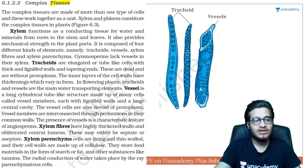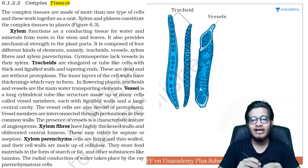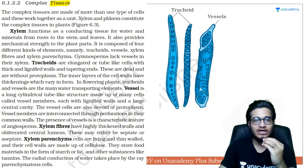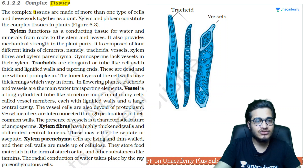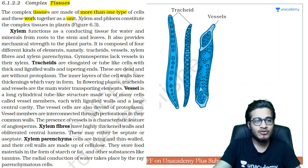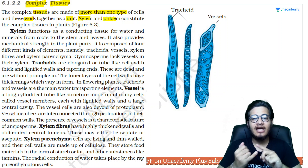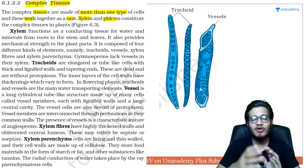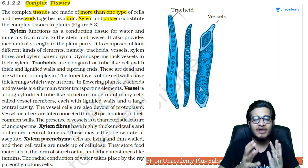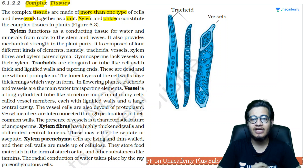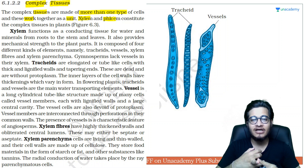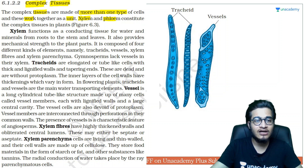Today we talk about complex tissues. In simple tissues we studied parenchyma, collenchyma, and sclerenchyma — all made of one type of cell. But tissues made of more than one type of cell, working together as a single unit, are called complex tissues — like xylem and phloem. Xylem has tracheid, vessel, xylem fiber, and xylem parenchyma. Phloem has sieve tube elements and companion cells. All parts work together as a whole unit.